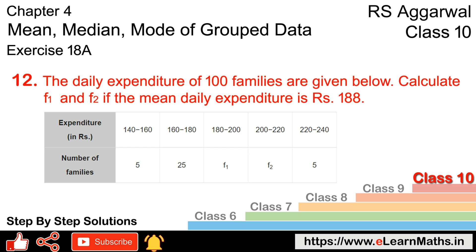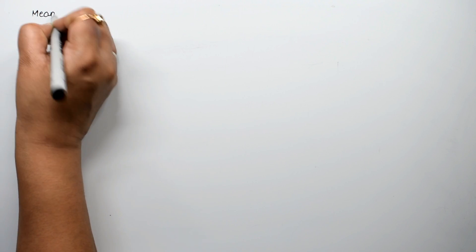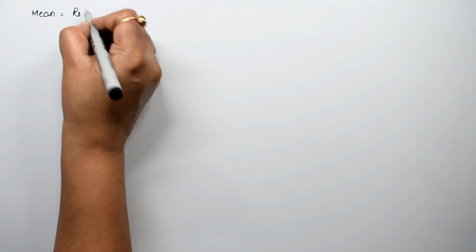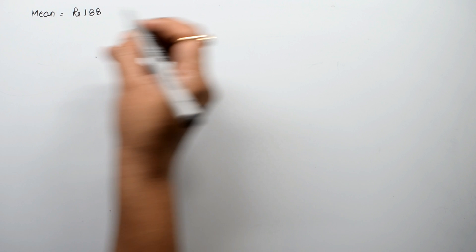We need to calculate f1 and f2, given that the mean expenditure is 188. So the mean value is 188 and we have to find the values of f1 and f2.